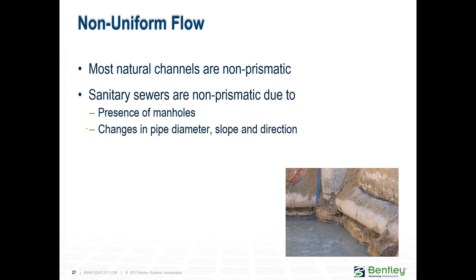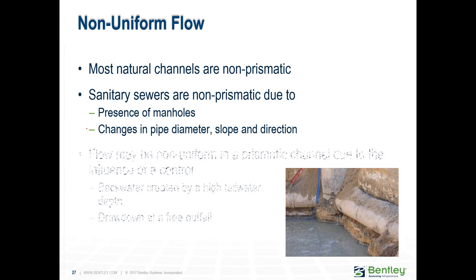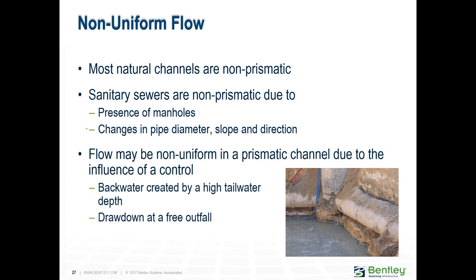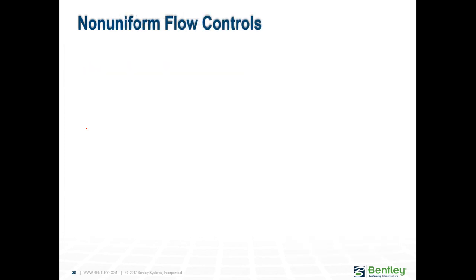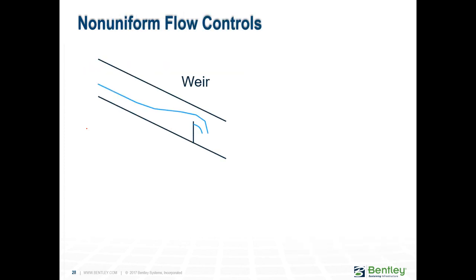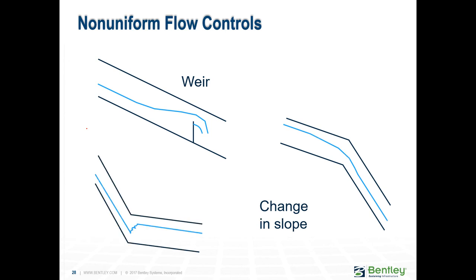We know that most natural channels are non-prismatic. Our sanitary sewers are considered non-prismatic because there are manholes that change the way flow varies in space. The pipe diameters also change — they tend to increase as flow moves downstream. There are changes in slope and direction, and you can also have controls like weirs that you use to influence the water levels in your pipes or open channels.